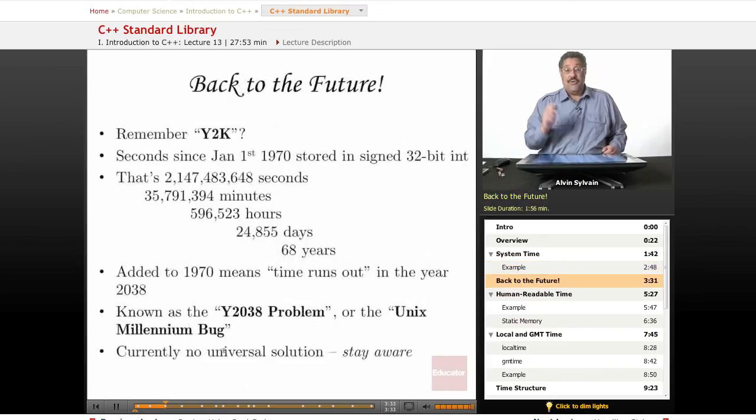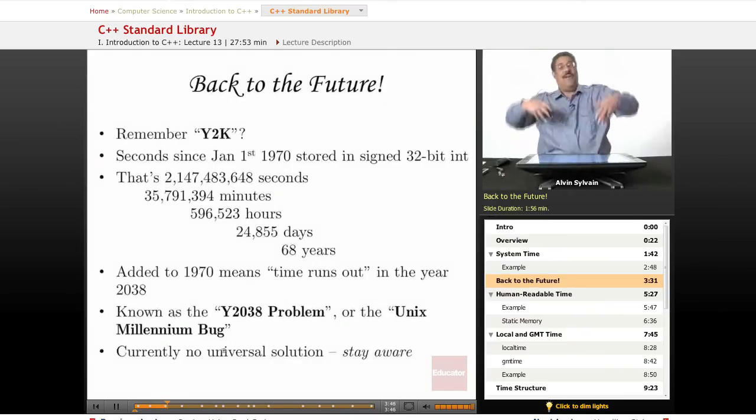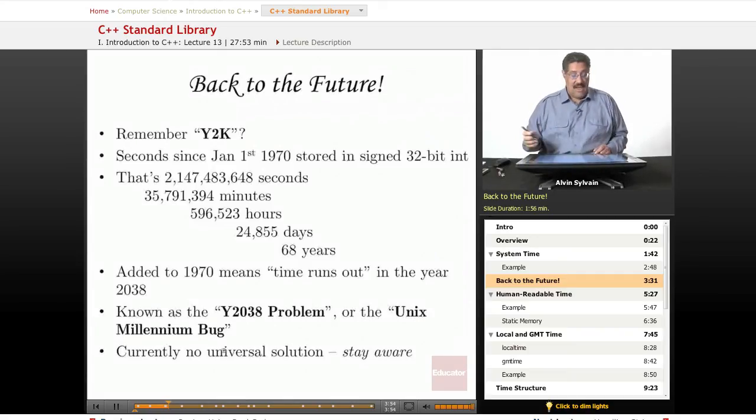Now, I'm sure you remember the Y2K bug when it was 1998. It was going to be 1999 coming up in the year 2000. Everybody's worried. Oh, and all the computers are going to think it's 1900 and the airplanes are going to fall out of the sky and the elevators will go sideways. None of that happened, of course. But there's another similar bug on the horizon.